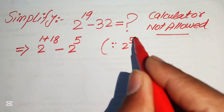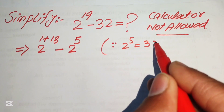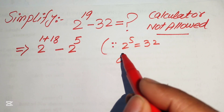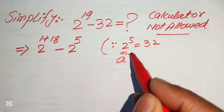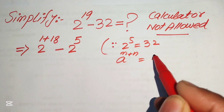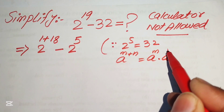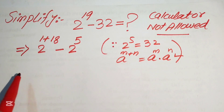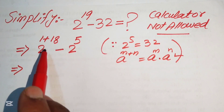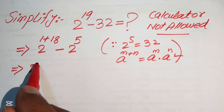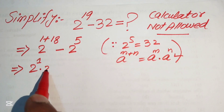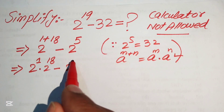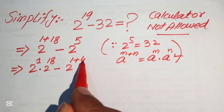We know that 2 to the power of 5 equals 32. And we know that if you have a to the power of m plus n, we write it as a to the power of m into a to the power of n. So now we apply this exponential law on the first term and write it as 2 to the power of 1 into 2 to the power of 18 minus, similarly we break 2 to the power of 5 as 2 to the power of 1 plus 4.